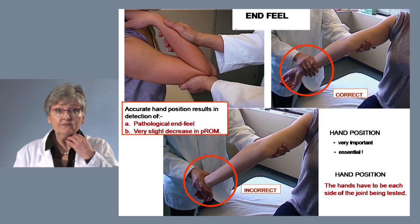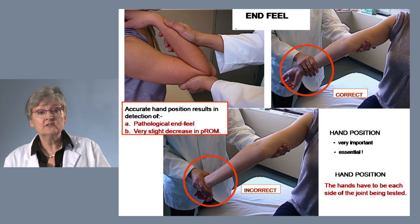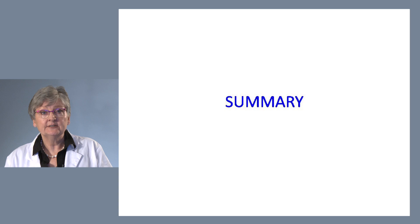End feel is very important, and hand placement matters. For elbow flexion, soft tissue limits the range. For elbow extension, the correct position is to have your hands either side of the elbow joint. If your hand is on the hand itself rather than the distal forearm, you lose the sense of end feel on elbow extension.